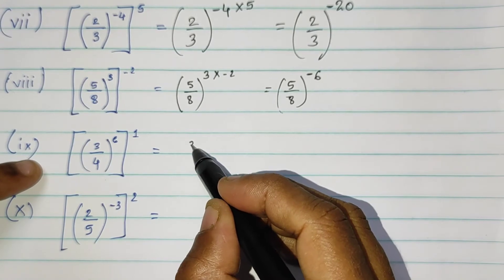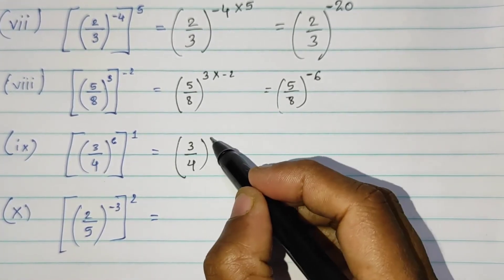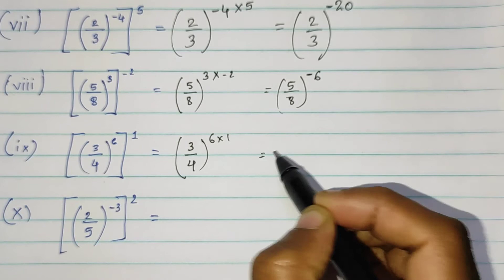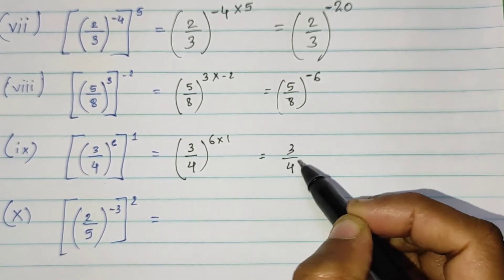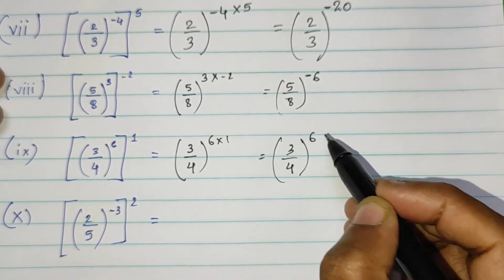Then, 3 upon 4 the whole raised to 6 into 1. So 3 upon 4 the whole raised to 6 times 1 is 6.